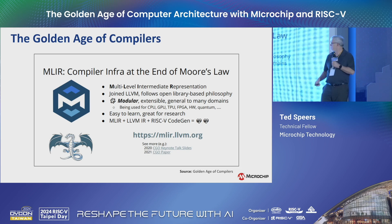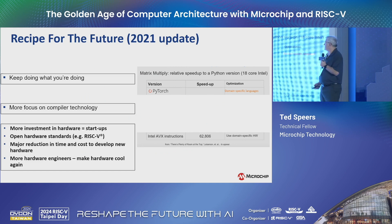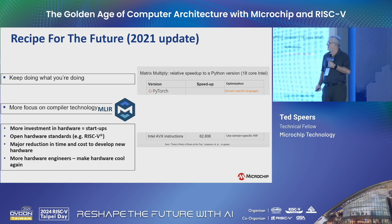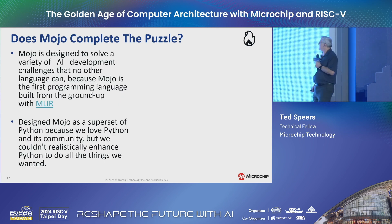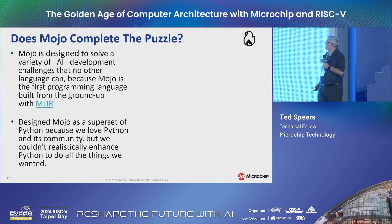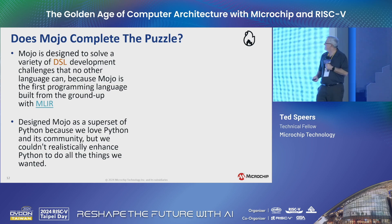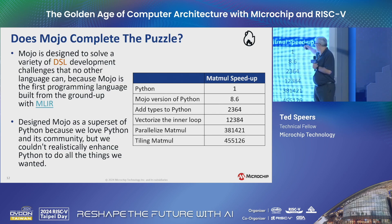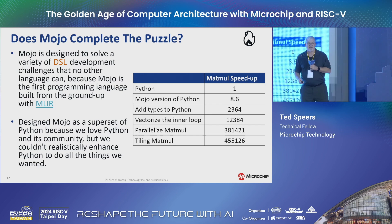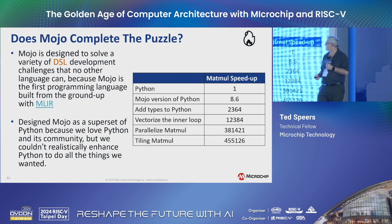MLIR — Multi-Level Intermediate Representation — is the answer: the golden age of compilers. It enables people to write compilers to target heterogeneous hardware. The recipe of the future: MLIR stepped in and answered the compiler question. Now Chris Lattner has a language called Mojo, which completes the puzzle. Mojo is designed to solve a variety of hardware AI development problems and is the first language developed on MLIR — he's eating his own dog food. It's a superset of Python, and you can get a 455,000x acceleration of matrix multiply using Python targeting a specific architecture.